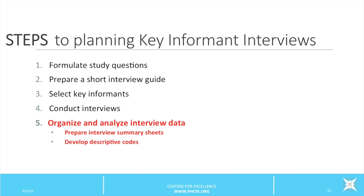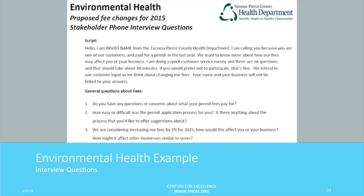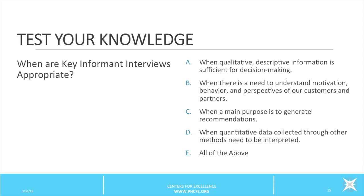Let's take a look at an example from the field. Here is an example from Tacoma Pierce County Health Department's Environmental Health Division. Each year they review their fee structure and conduct a routine public health review process. This year they also included 14 key informant interviews to share information about the proposed 2015 fee increase and potential future fee increases, and to identify customer concerns, questions, and suggestions. Here is an example of their interview guide with a script and general questions. Lastly, here is an example of the customer input analysis summary completed after the final analysis, which groups feedback into themes, issues, and recommendations.